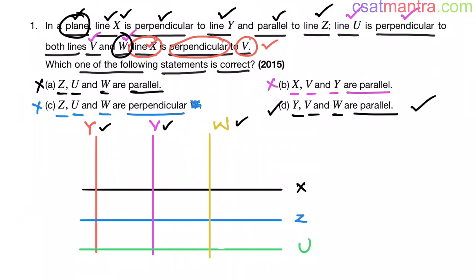Very easy problem. The key here is you have to draw each and every line in the plane. Go step by step. Draw all the lines which are parallel and perpendicular to x, and then draw all the lines which are parallel and perpendicular to u. From this you can find out the answer.